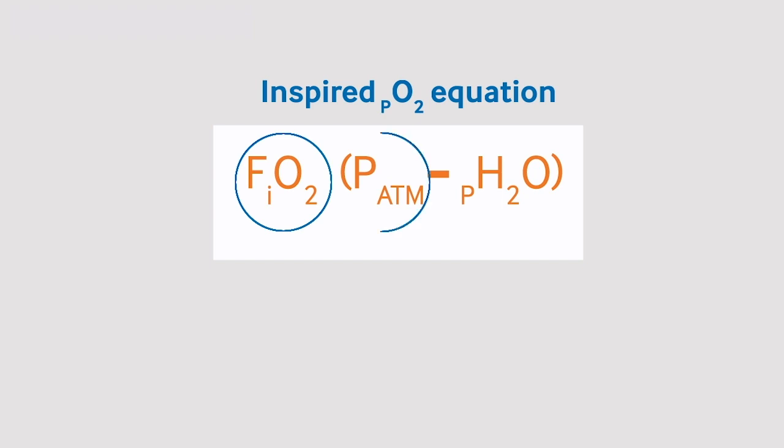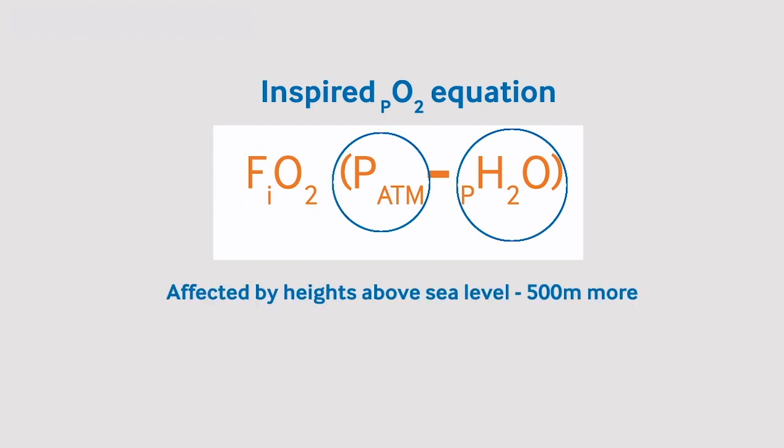This should then be multiplied by the atmospheric pressure minus the partial pressure of water. The atmospheric pressure and the partial pressure of water are affected by the height above sea level, but this is negligible unless at significant heights, so above 500 metres. Therefore, for most of you, this part of the equation is constant.